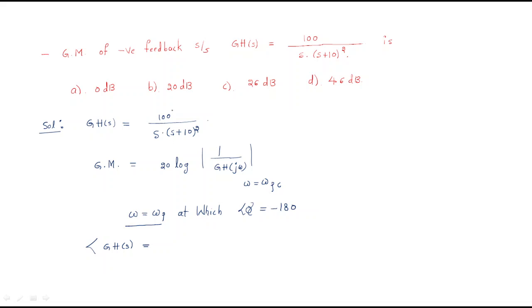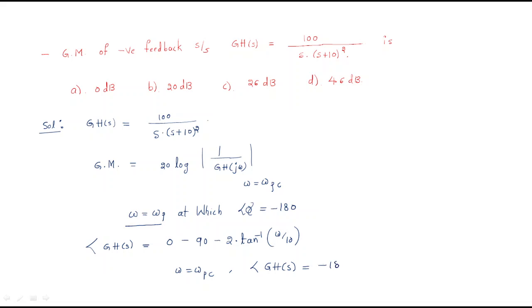The phase of the given system: for the constant 100 the phase contribution is zero; for the single pole 1/s, the phase is minus 90 degrees; and for the double pole (s+10)², the phase is minus 2·tan⁻¹(ω/10). Substituting the phase crossover frequency, we set the total phase equal to minus 180 degrees.